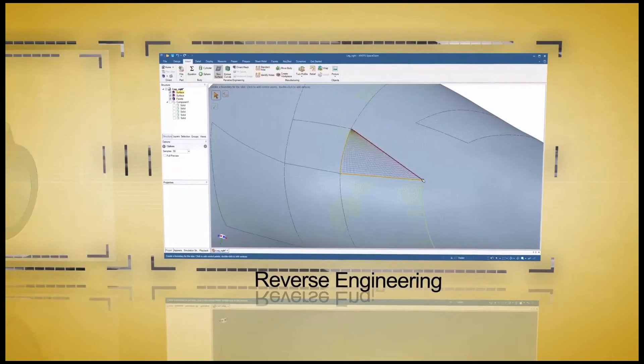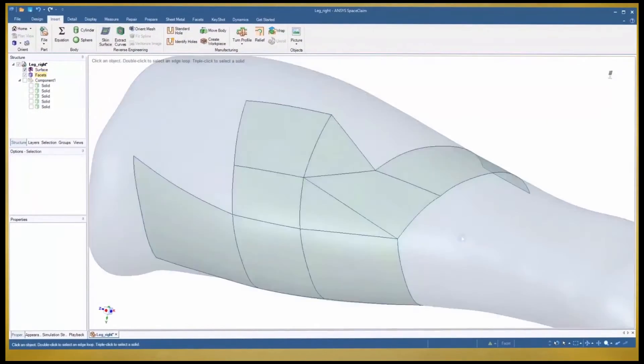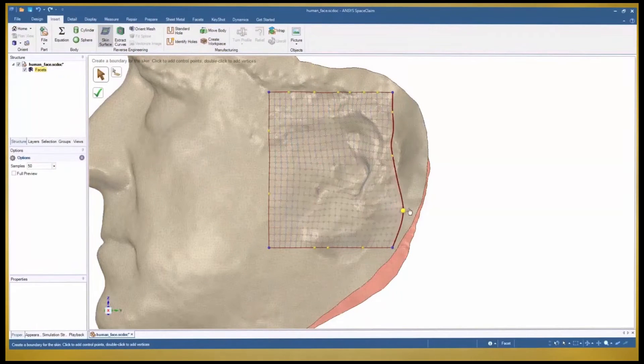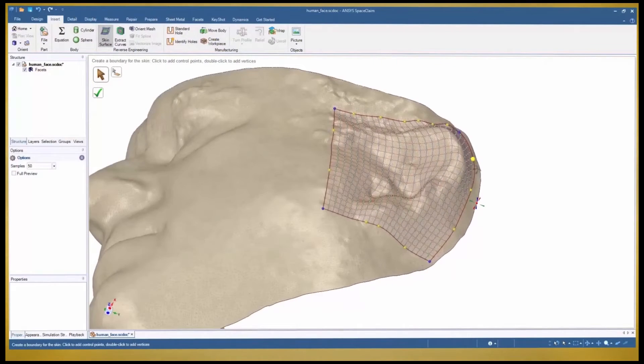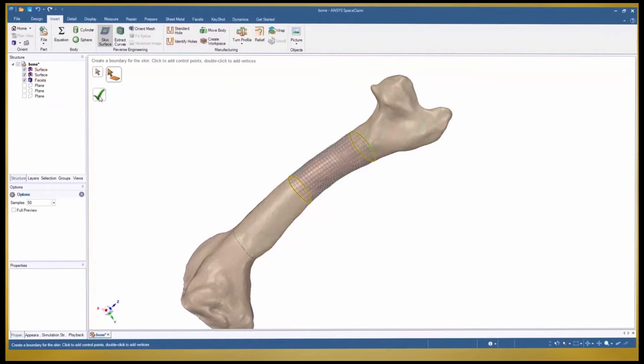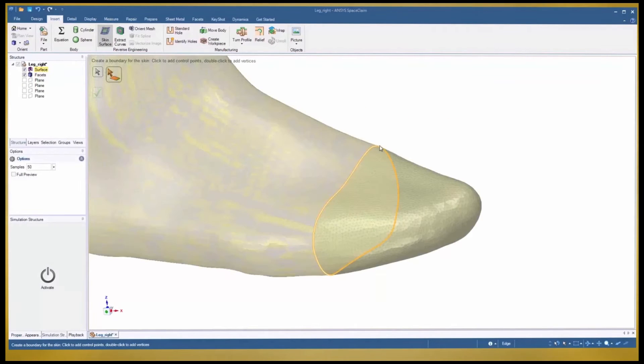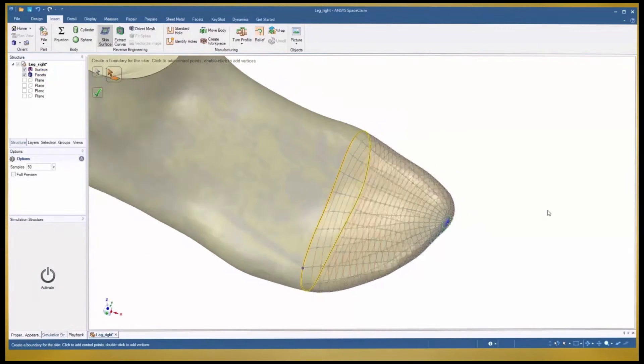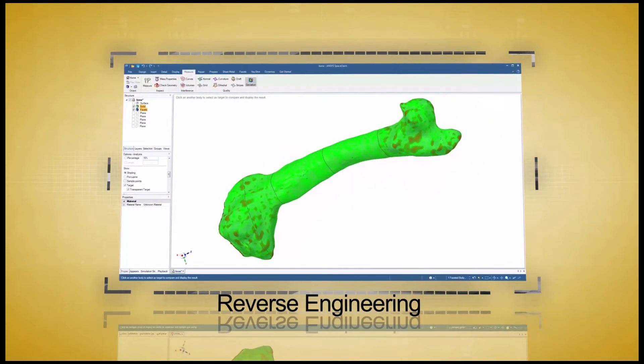For reverse engineering in SpaceClaim, the Skin Surface tool is a true breakthrough. Use one of several techniques to create highly accurate surfaces that are always editable to your choosing. This versatile tool works great with STL files that are periodic in nature, even converting loops to a single point. And a final deviation check will give proof to the accuracy of your work.